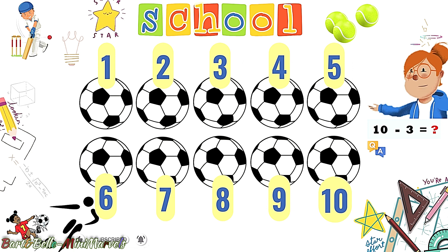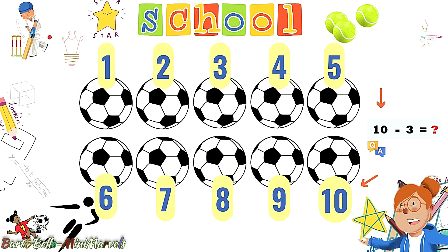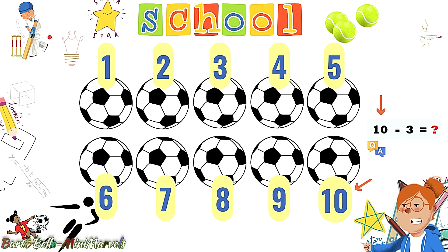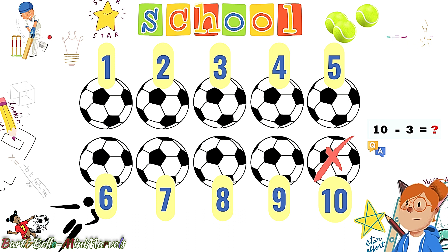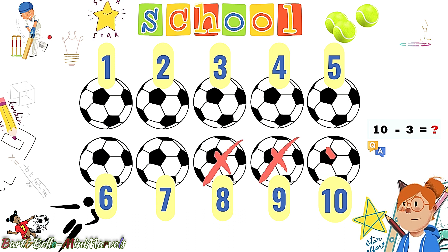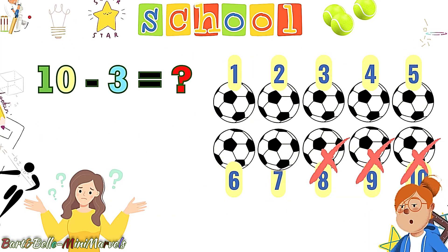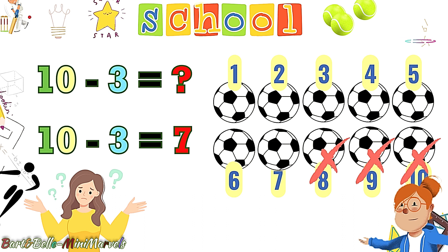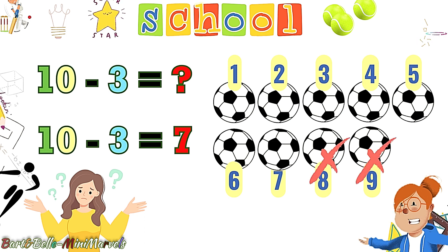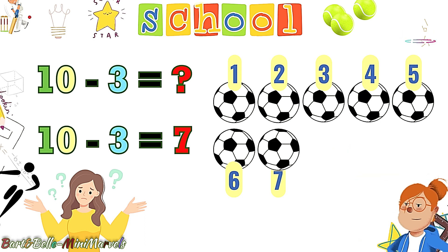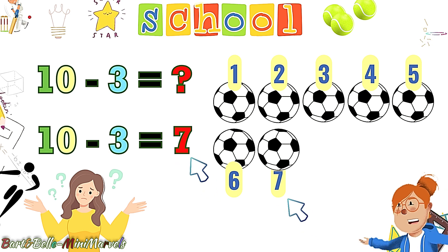To solve the question, let's put 10 footballs on the screen again. The 10 from the question determines the total number of footballs, and this 3 is showing the number we have to kick away to get the answer. We will simply kick 3 footballs. Let's do this! Yes! This way. Now let's count the remaining footballs: 1, 2, 3, 4, 5, 6, and 7. We have solved another question.